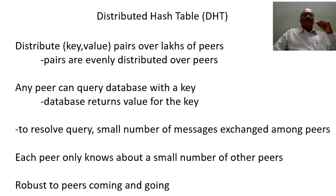A distributed hash table distributes key-value pairs across a set of peers — basically computers connected with each other in a peer-to-peer network. These key-value pairs are evenly distributed over the peers. Whenever you want to retrieve a value, you can access it based on the key which is available on a particular computer.